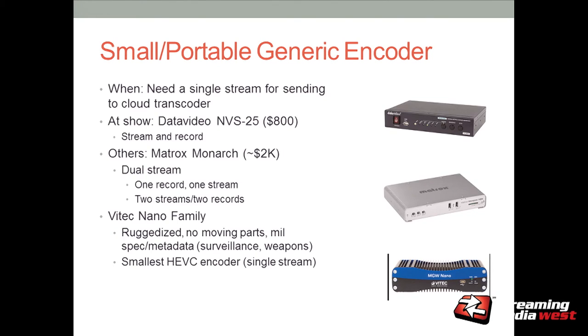For a small portable generic encoder — if you just need to send a single stream to a Wowza media server or to Ustream — the Data Video NVS-25 is a simple box that does H.264 real-time encode to send to a live streaming service. The Matrox Monarch is dual stream, giving you the ability to record one stream — a 20 megabit per second stream — direct to SD card on the encoder for later editing, while outputting another stream to Ustream or another live streaming service provider. You could do a 5 Mbps stream at 720p and store a 20 Mbps 1080p stream simultaneously.